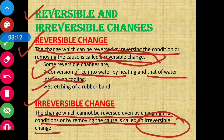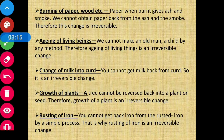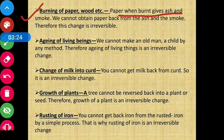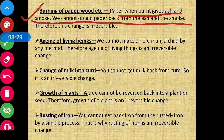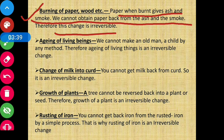Let us see a few examples of irreversible changes. First is burning of paper, wood, etc. When paper burns, it gives ash and smoke. We cannot obtain paper back from the ash and smoke — therefore this change is irreversible. Jab hum paper ko burn karte hain toh ash aur smoke milta hai; us raakh aur dhuen se dubara paper nahi milta — isliye that change is called an irreversible change.